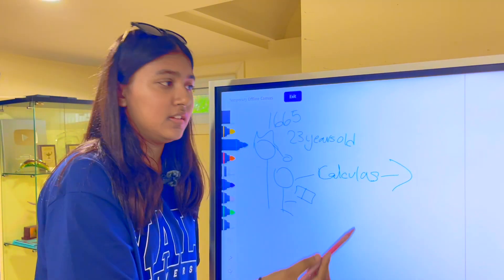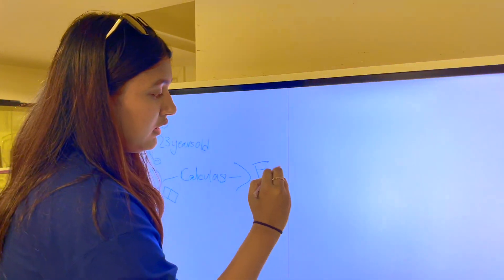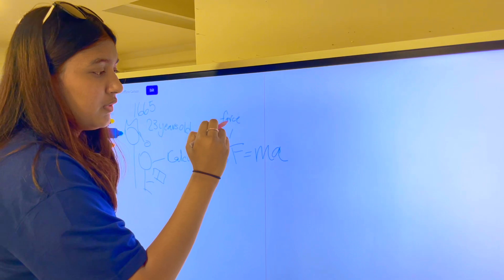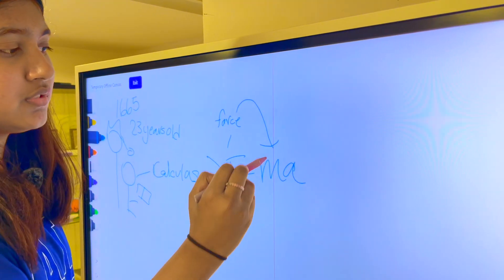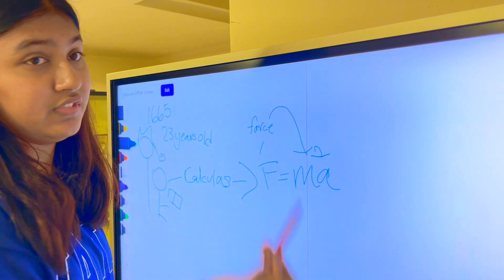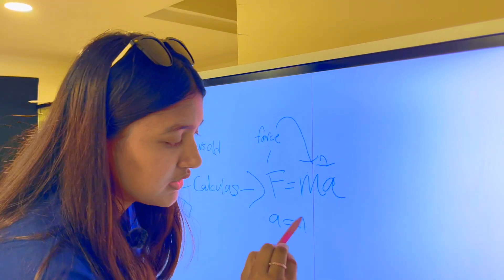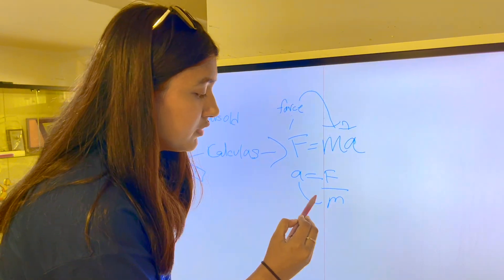With this calculus, he invented F equals MA. This means force, which means force is proportional to mass and acceleration. And acceleration is proportional to force, is inversely proportional to mass.